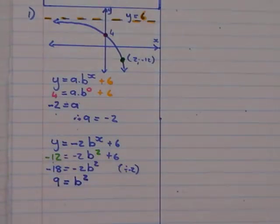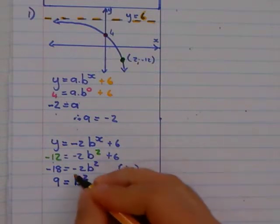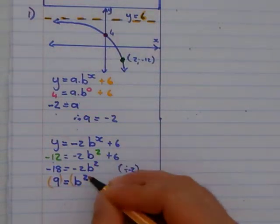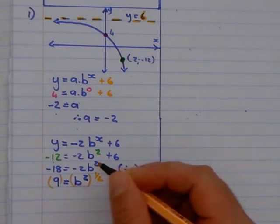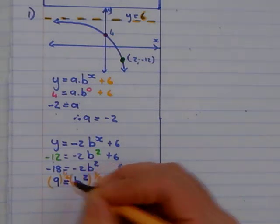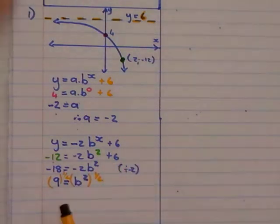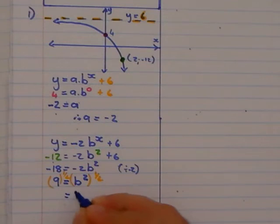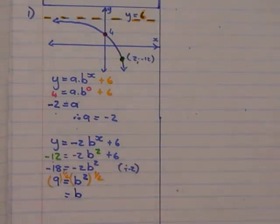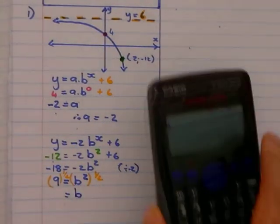Now I use exponent laws. So I'm going to go both sides and place it to the power of the opposite of 2 is 1 over 2. I square it by half both sides. So b 2 times a half is 1, so it's b to the power of 1 or just b. And then 9 to the power of 1 over half is 3.